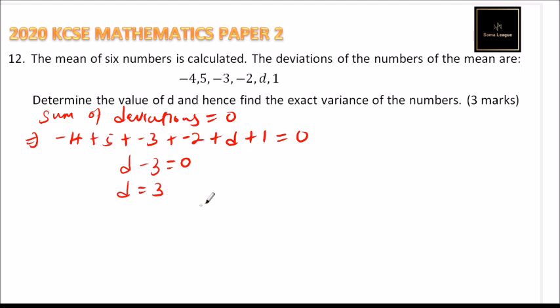Now we come to variance. We say variance is equals to the summation of d squared, that is deviation squared, divided by the number of data that we have.